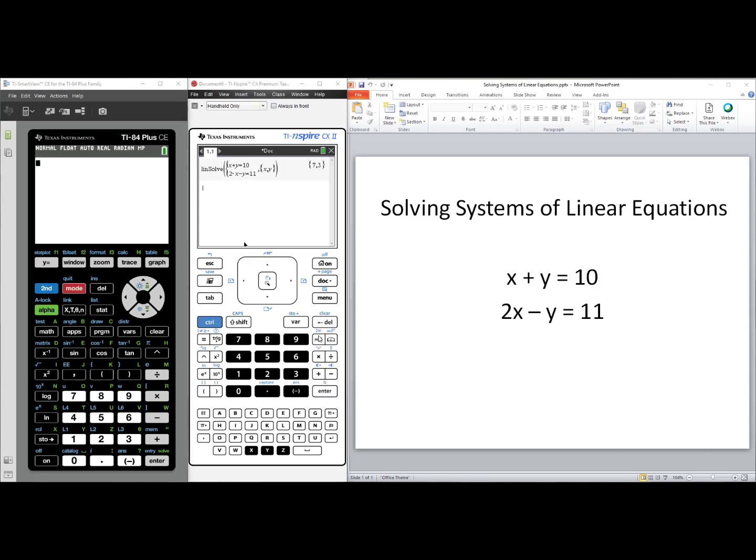For the TI-84 Plus, we will press the Apps key. We will use the Polynomial Root Finder and Simultaneous Equation Solver app. The title for the app is P-L-Y-S-M-L-T-2. Select your app. Choose number 2, Simultaneous Equation Solver. We can now set up our Simultaneous Equation Solver. We have two equations with two unknowns. Next is associated with the Graph button, so I'll press Graph.